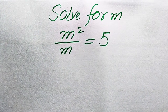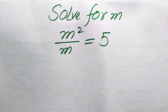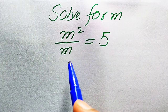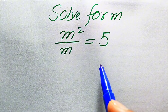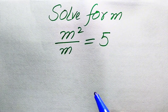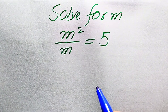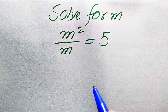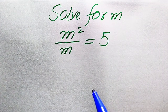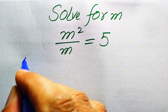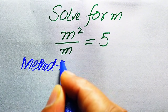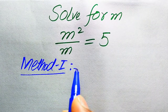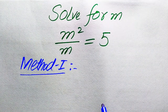Hello everyone, welcome. We'll solve this algebra problem: m squared divided by m equals 5. We need to find all roots of this equation, and at the end we'll verify which roots are solutions and which are extraneous. We'll solve this using two methods — feel free to share any other method you know in the comment section.